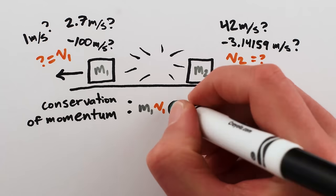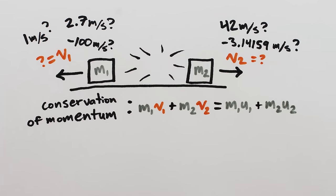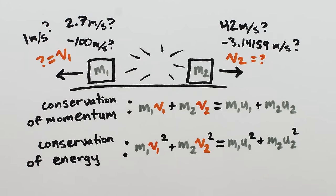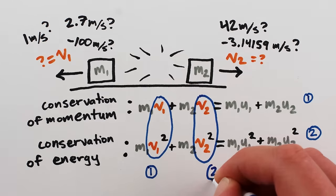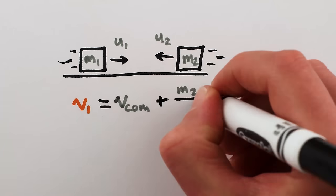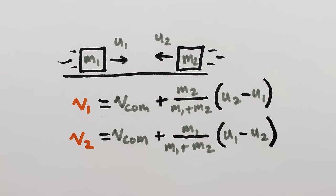But conservation of momentum provides one equation those variables have to satisfy, and conservation of energy provides another equation those variables have to satisfy. And in our universe, two independent equations for two unknown variables will uniquely determine those variables. So for each possible combination of masses and incoming velocities, there's only one possible outcome of a one-dimensional collision.